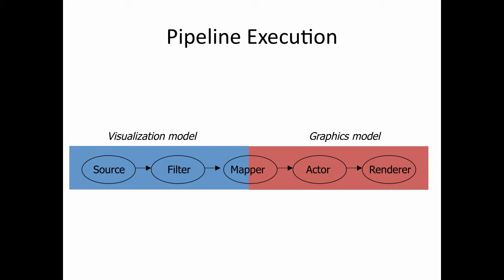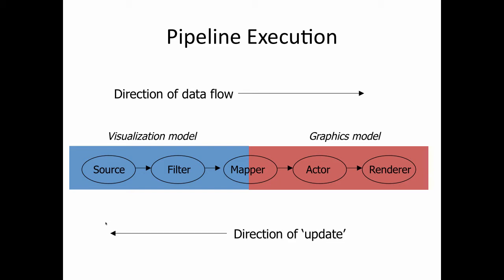We take the output of the mapper to create what we call actors. Actors are graphical objects — they can be a collection of triangles, colors, or other related properties. The renderer is responsible for displaying the actors to the final display window. Data flow from left to right, and the update direction is from right to left. When you want to re-display the image from a different view angle or display a different part of the data, the request is sent from right to left, and the algorithms are run again to convert the data to new geometry.